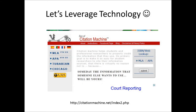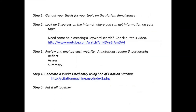But this is one a classmate of yours did — also really, really good. It has the citation, the summary, the assessment, and the reflection. You're going to find three sources and do all four steps for each of those three sources. So take this process and repeat it so that you have three annotations total.